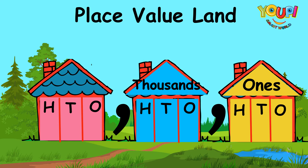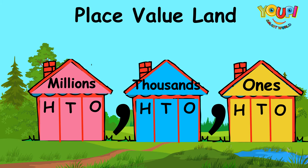The third family called themselves the Millions family. This solved all of their problems. When the gate was up, the families knew they had to call out the last names of the children they wanted. For example, if the Thousands mom only wanted her child named Ten, she would have to call out "Ten Thousand."